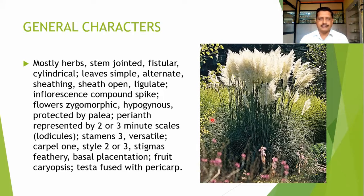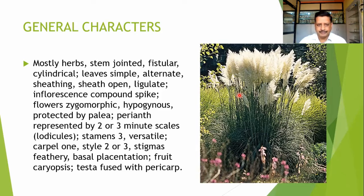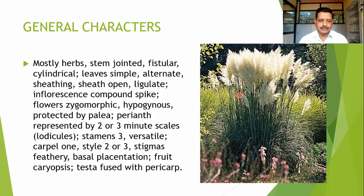Flowers are protected by the palea. Slightly different terminology is used for Poaceae. The perianth is represented by two or three minute scale-like structures known as lodicules. Stamens are three and they are versatile. The carpel is normally one, and styles may be two or three. Stigmas in most members are feathery. Placentation is basal, and the fruit is typically known as caryopsis, because the seed coat is fused with the pericarp.